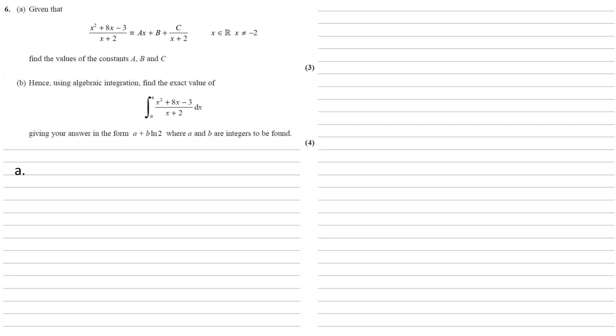Given that x squared plus 8x minus 3 all over x plus 2 is identical to ax plus b plus c over x plus 2, we need to find the values of the constants a, b and c. So we're going to do this by using some long division to divide the numerator by that denominator x plus 2.